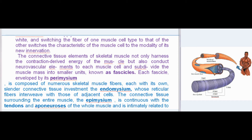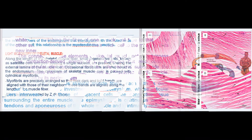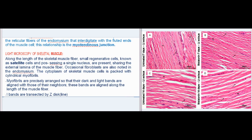The connective tissue surrounding the entire muscle, the epimysium, is continuous with the tendons and aponeuroses of the whole muscle and is intimately related to the reticular fibers of the endomysium that interdigitate with the fluted ends of the muscle cell — this relationship is the myotendinous junction. Along the length of the skeletal muscle fiber, small regenerative cells known as satellite cells, possessing a single nucleus, are present, sharing the external lamina of the muscle fiber. Occasional fibroblasts are also noted in the endomysium.